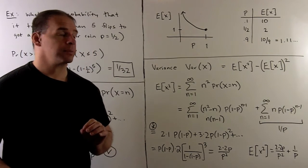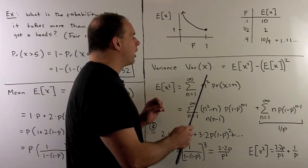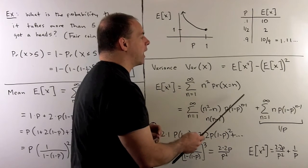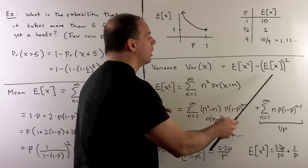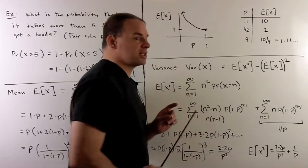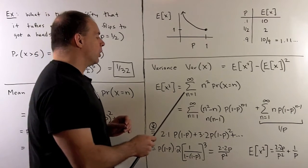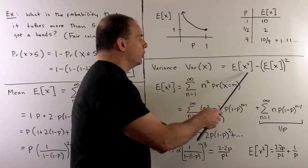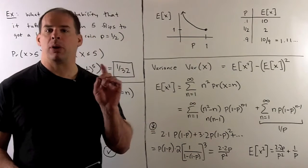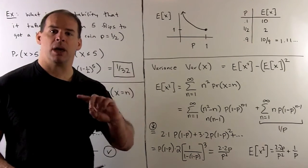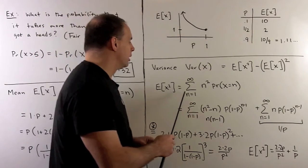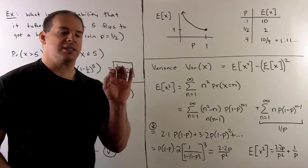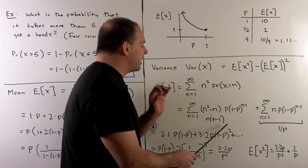Next, let's consider the variance, which tells us the spread of the random variable about the mean. The formula: we take the second moment E[X²] and subtract off the mean squared. We've already worked out the mean, so all the focus is on getting the second moment. We're going to take all values N of our random variable, use N squared weighted by the probability of getting each value, and sum over all possible values. Writing out the first few terms probably won't reveal a useful pattern, so instead we want to make use of our third identity from the previous board — trying to get an N times (N minus 1) into the picture.